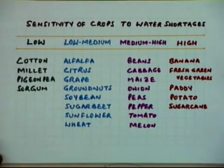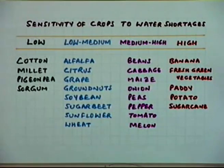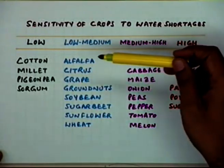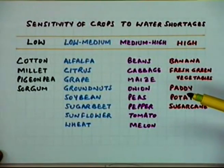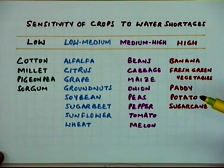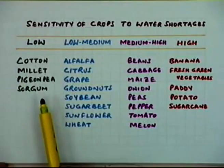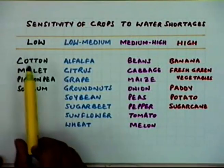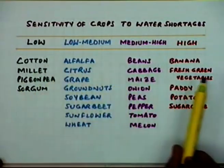Some crops can survive with a low level of moisture availability, while others are very sensitive to moisture deficit in the soil and will decay under deficit conditions very fast. That determines how long you can wait before applying irrigation water, which is an important aspect when designing irrigation systems. Most crops are broadly divided into four groups based on their sensitivity.